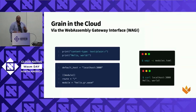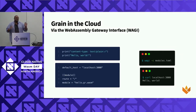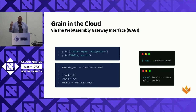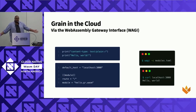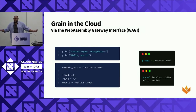Now I want to talk a little bit about WAGI, the WebAssembly Gateway Interface. If you want to get up and running writing a web server, this is probably the easiest way to do it. In fact, it's just two lines of code — two print statements. We print out a content type, text/plain, and we print out Hello World. You've got a little configuration, you run WAGI, boom, you've got a server. You curl that — Hello World. You just wrote Hello World in two lines of code. That's not Grain being awesome; that's just WAGI. WAGI is just that easy.